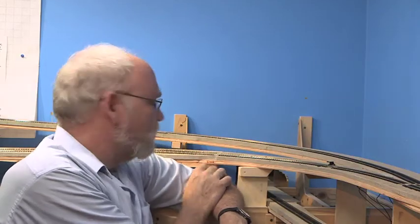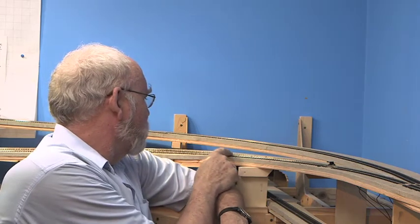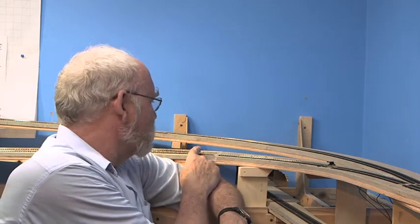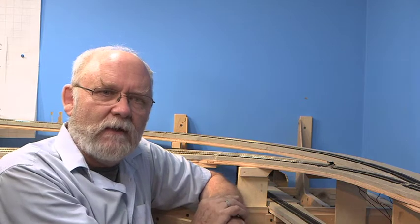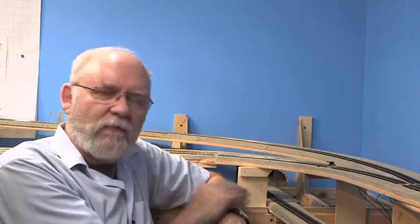There you have it. One very nice transition joint between code 70 and code 55 rail. Didn't take that long to do. It's a lot quicker to do when you're just doing the work rather than having to stop and shoot video and all that stuff. It's not hard to do. There are a lot of different ways to make rail joint transitions like this. Take a look at them. You might find another one that works better for you. This system works well for me. It has for an awful lot of years. So I'm going to keep doing this one. And you might want to give it a try too. Who knows? It might work for you.